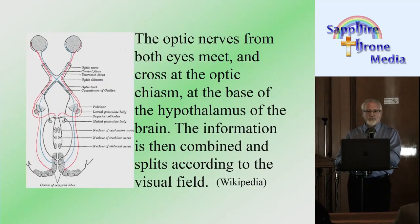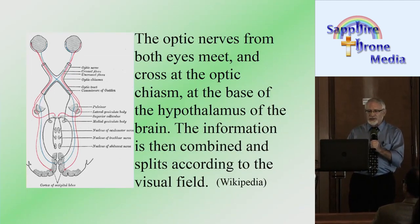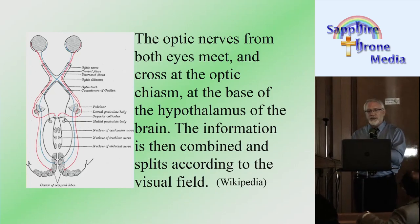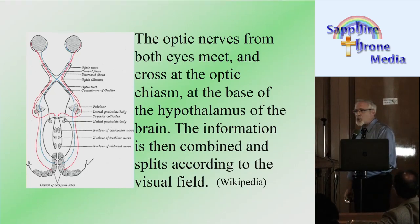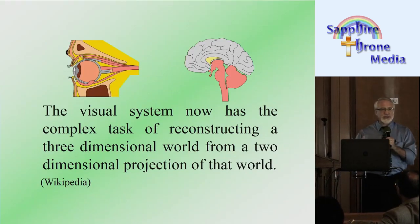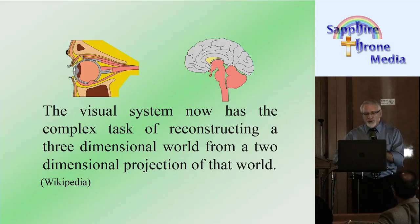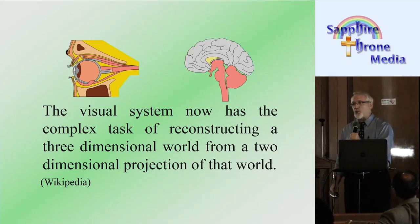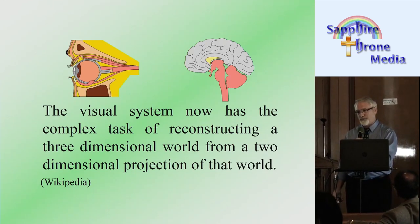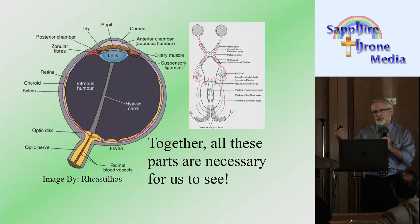The optic nerve from both eyes meets and crosses at the optic chiasm at the base of the hypothalamus of the brain. The information is then combined and splits according to the visual field — left and right. The visual system then has the complex task of reconstructing a three-dimensional world from a two-dimensional projection of that world. Together, all of these parts are necessary for us to see — take away one of those parts and you do not have vision.